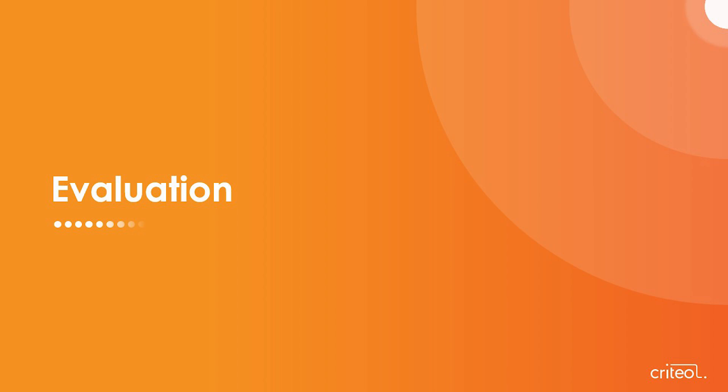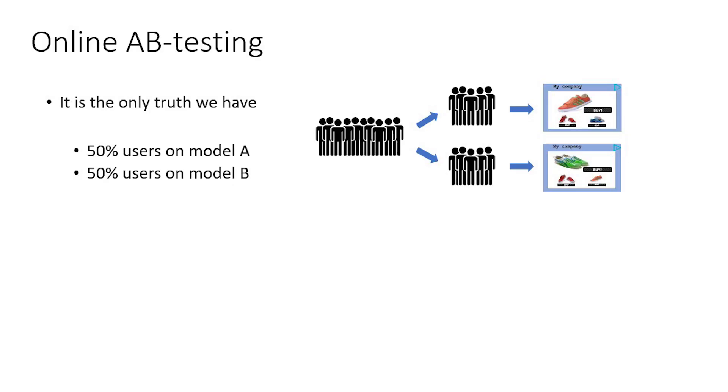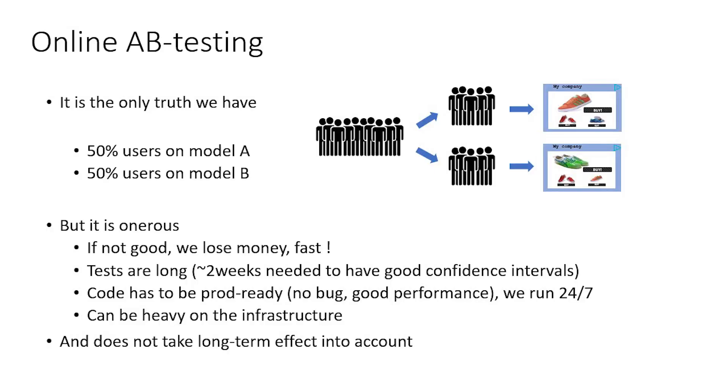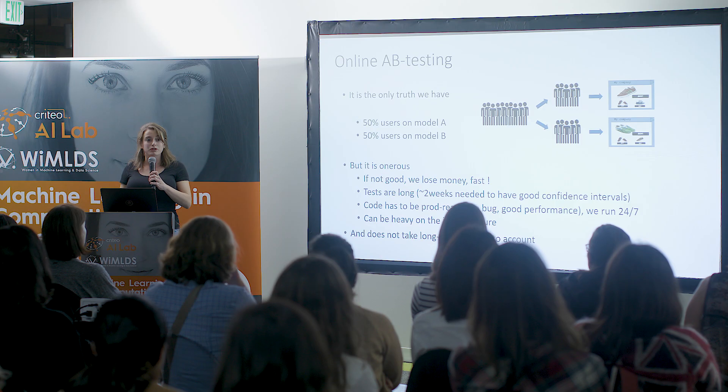How do we evaluate both our models online and offline? We do online A/B testing — splitting the user population in two and using different models for each. It's a source of truth, but it's very onerous. It can go wrong fast, and with the volume of requests we have, a bug for five minutes means a lot of money lost. Tests also take a long time — as mentioned, it takes five days to have a sale, so to know if a model not only gets clicks but also sales, you need to run it for a long time. You can't run many A/B tests simultaneously without shrinking your confidence intervals. The code has to be production-ready, and it's heavy on infrastructure because you need to fit two models in memory.